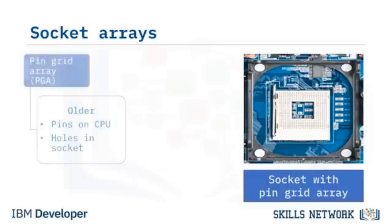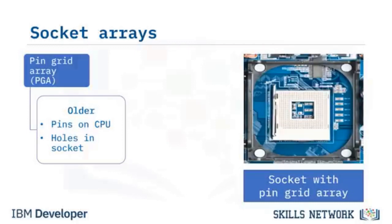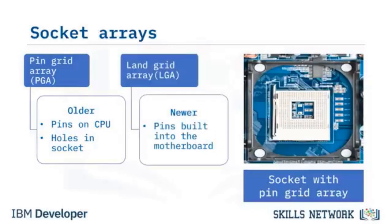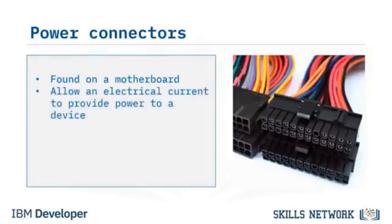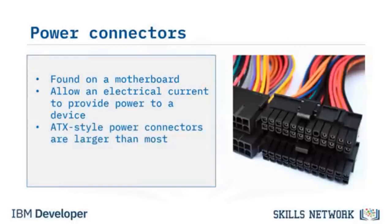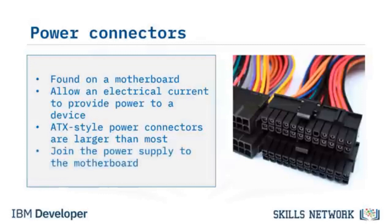Older sockets use a pin grid array, or PGA, that uses short stiff pins on the CPU that align with holes on the socket. When installing a CPU, do not force it into the socket — if the CPU and socket are correctly matched, the CPU should fit. Newer motherboard sockets, called Land Grid Arrays or LGAs, have built-in pins and the CPUs have contact points on them. A power connector allows an electronic current to pass through it to provide power to a device. An ATX-style connector is one of the larger power connectors inside a computer that joins the power supply to the motherboard.